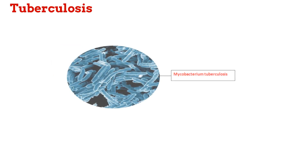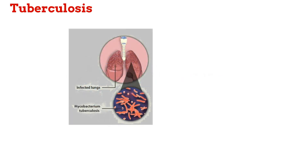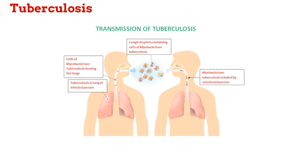Tuberculosis is caused by the bacteria Mycobacterium tuberculosis. Even though it can affect different organs, it most often affects the lungs. Tuberculosis spreads from person to person through air droplets. Some of the bacteria causing tuberculosis is expelled when an infected person coughs, sneezes, or spits. These air droplets containing the bacteria can get inhaled by someone nearby, leading to infection.